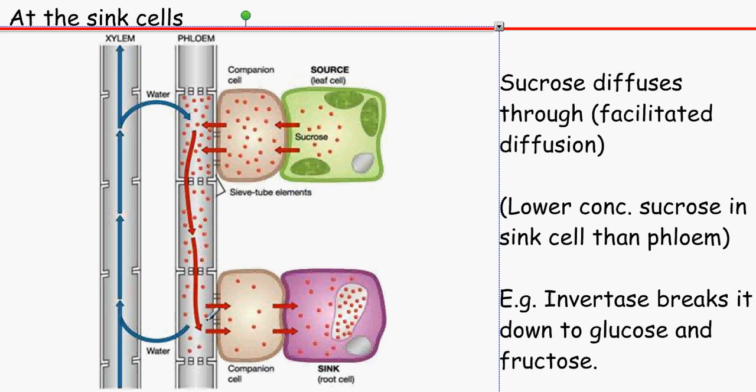And so it doesn't need ATP to move it there, to forcefully move it there. It's just going to do it by itself. So it's going to move through facilitated diffusion, all the way to the root cell which is a sink cell.